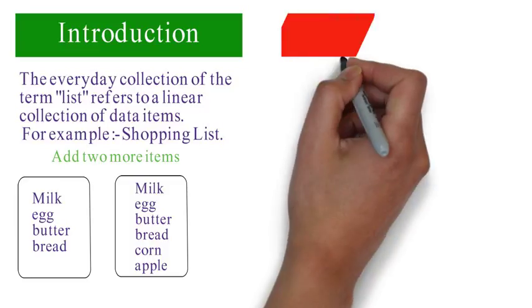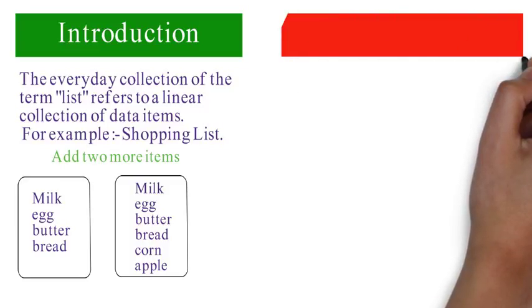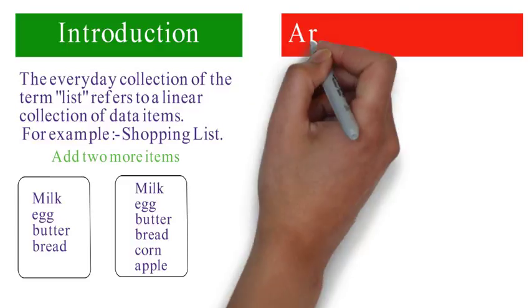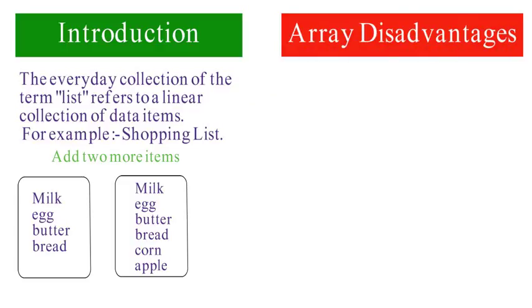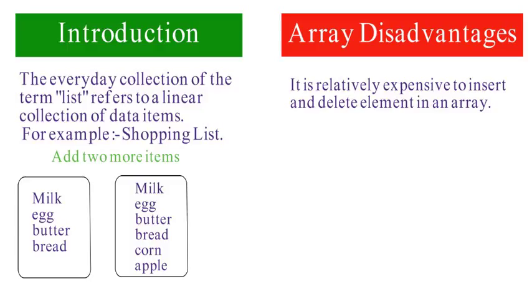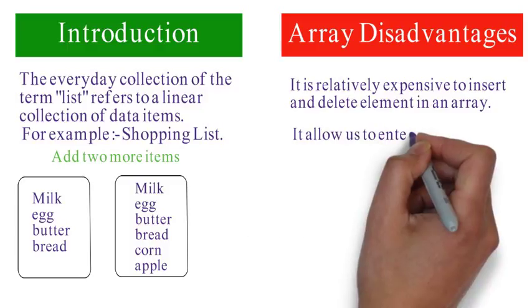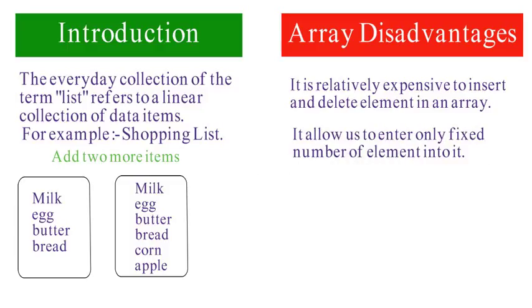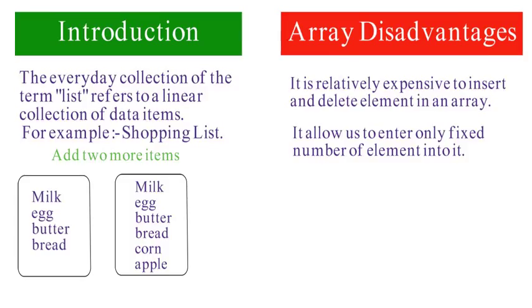So why are we using linked lists instead of arrays? Arrays have certain disadvantages. It is relatively expensive to insert and delete elements in an array, and it allows us to enter only a fixed number of elements into it.